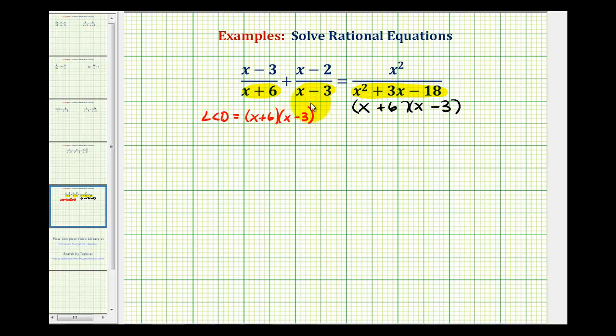So now instead of obtaining a common denominator, we're going to multiply each term in the equation, or both sides of the equation, by this product. So now we're going to go ahead and rewrite the original equation, leaving plenty of space horizontally.